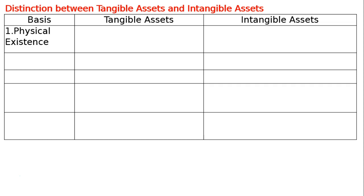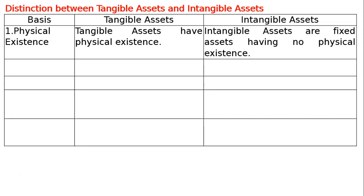The first basis is physical existence. Tangible assets have physical existence, whereas intangible assets are fixed assets having no physical existence.